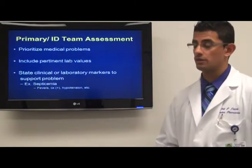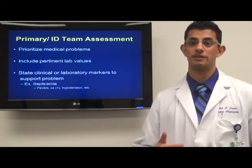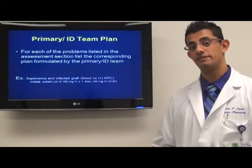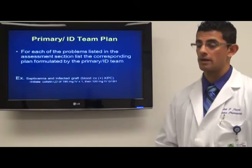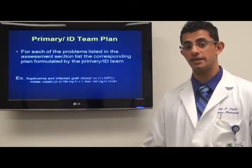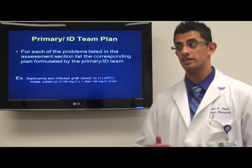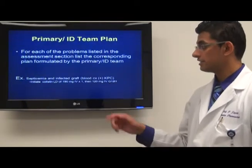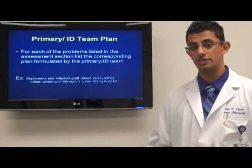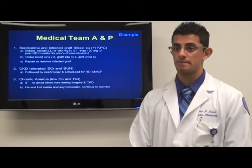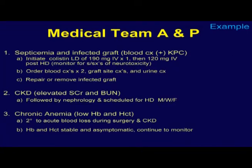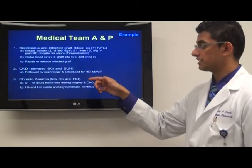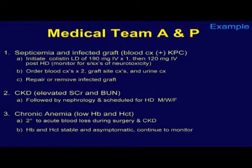For example, for septicemia we listed fevers, positive cultures, and hypotension. The treatment plan coincides with the assessment plan but includes specific instructions on how to actually treat each problem. Again, prioritize by medical urgency. You'll see that we listed the specific antibiotic to treat the problem along with monitoring parameters. In the full treatment plan, problem number one is the most urgent and life-threatening situation, taking priority over chronic kidney disease and chronic anemia. Each problem has its specific instructions on how the team went about treating it.